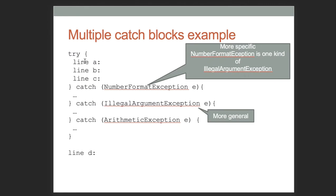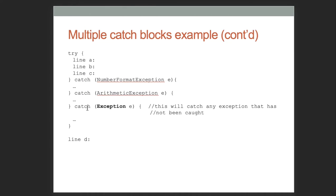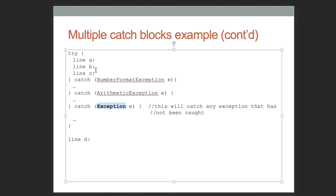Here's an example with multiple catches. We have a try with lines A, B, and C. The first catch handles NumberFormatException, which is a more specific version of IllegalArgumentException. We can also catch ArithmeticException separately. And if you want to catch any general exception, you can use the Exception type — that will catch any other kind of exception. Again, only one catch block executes at most. The general catch-all should always go last.